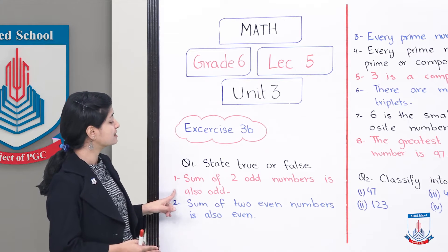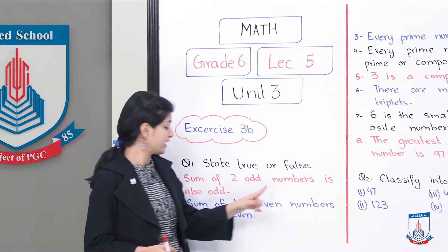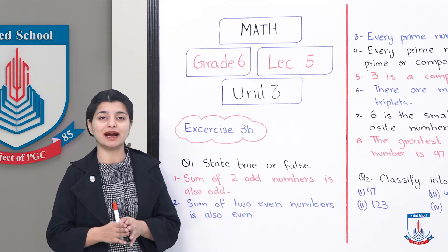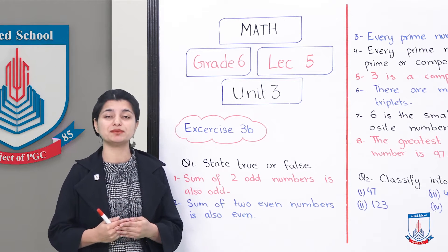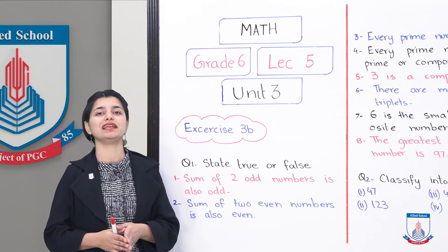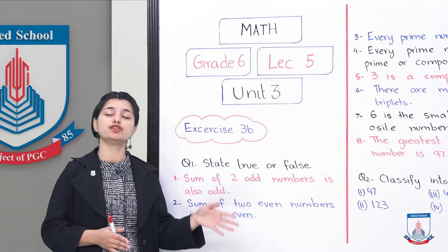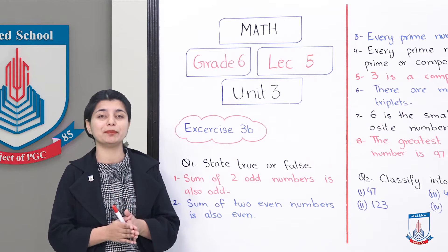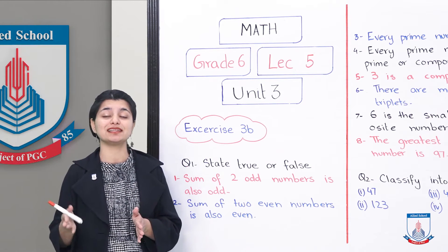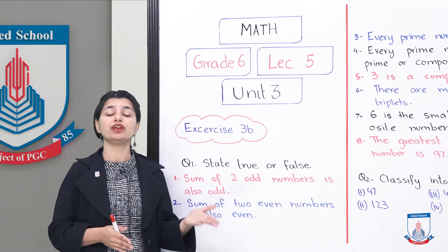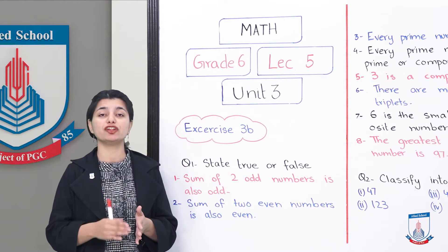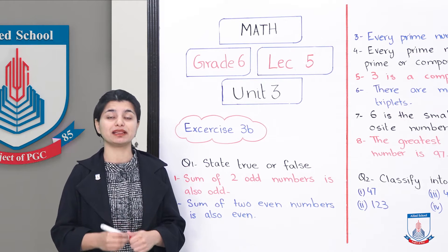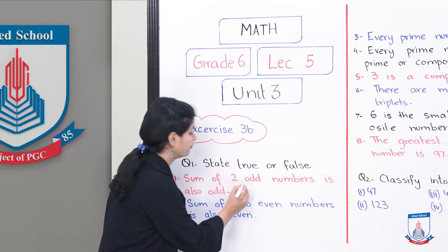Starting with the first statement: the sum of two odd numbers is also odd. Let's take an example. If 3 is an odd number, 3 plus 3 is 6, which is even. Similarly, 3 plus 5 equals 8, which is also even. So the answer is false — two odd numbers always give an even sum.